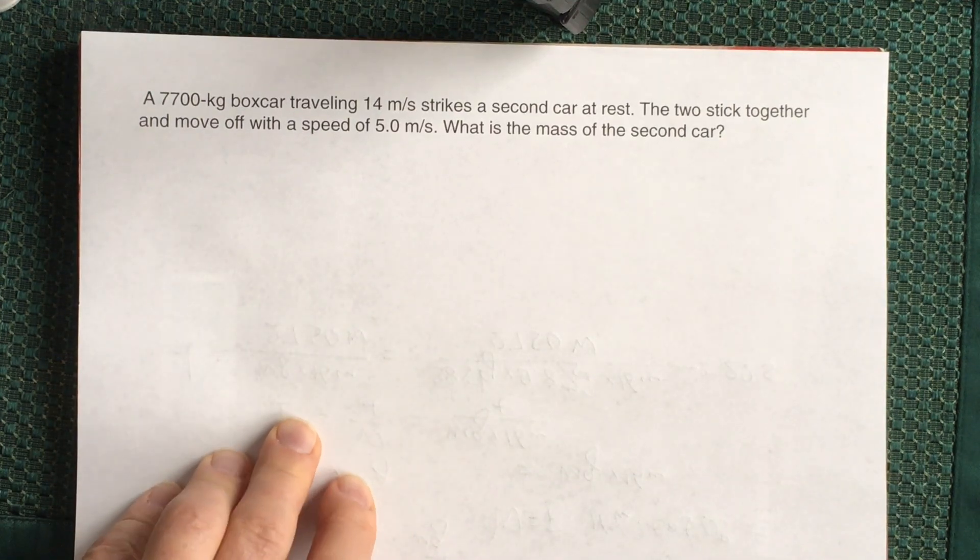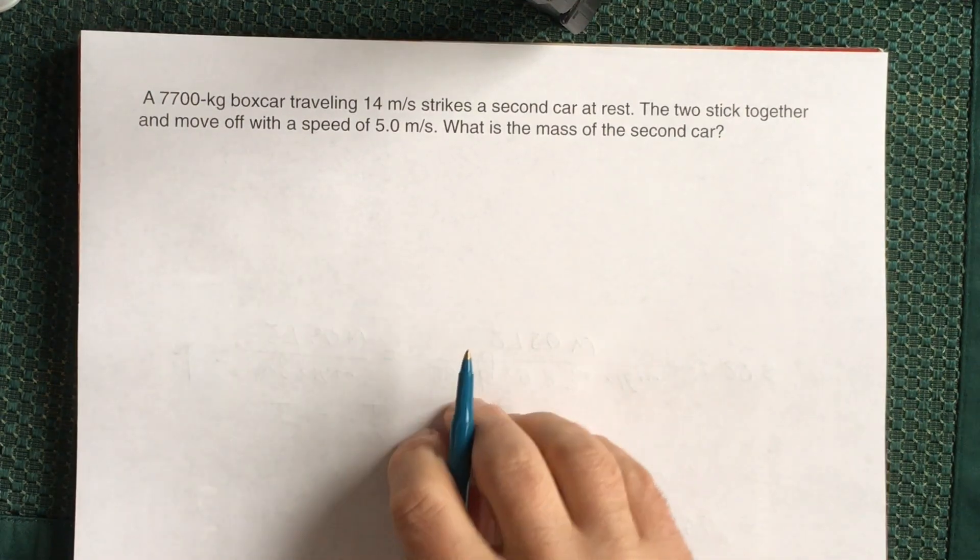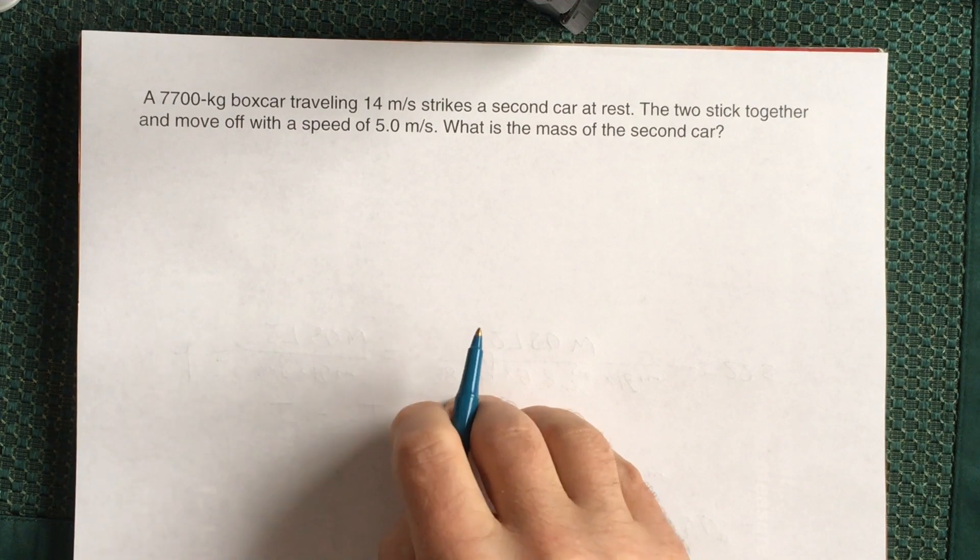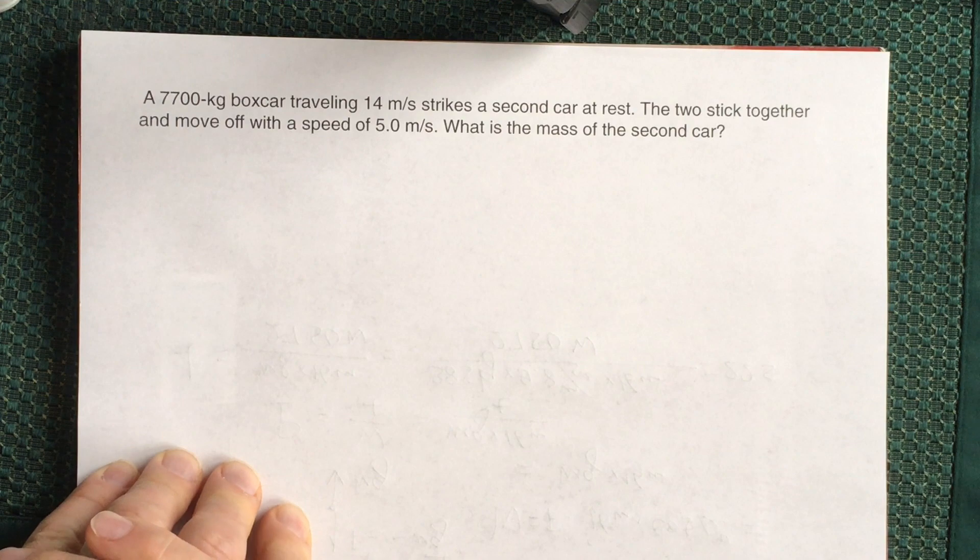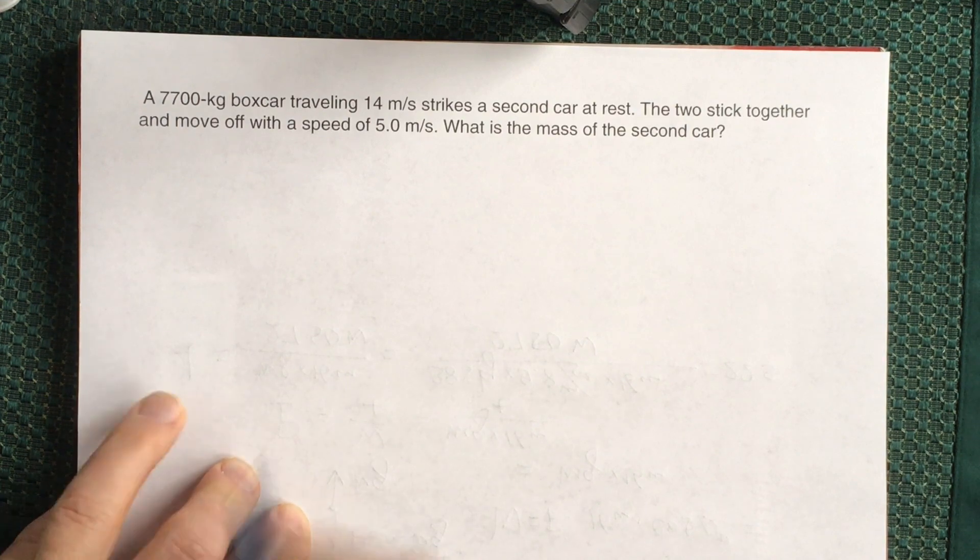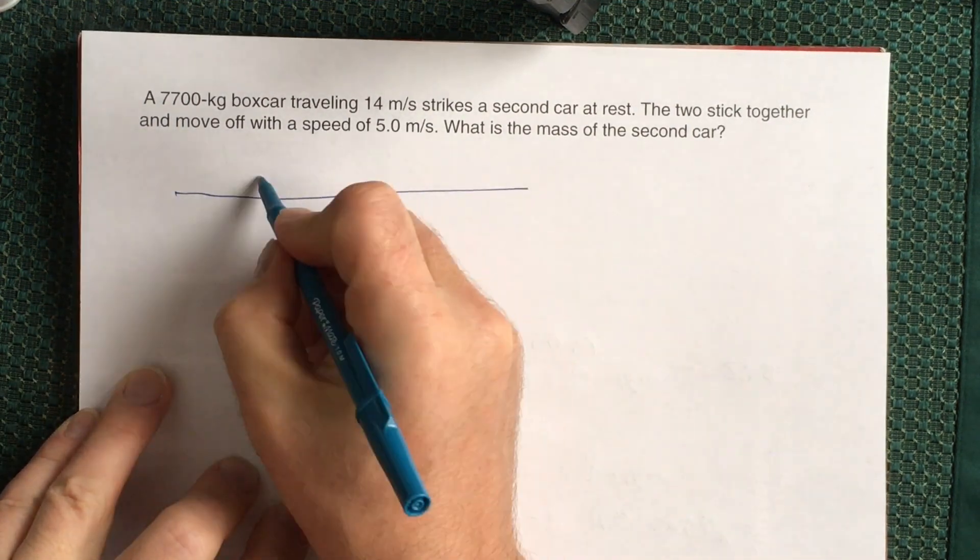A 7700 kg boxcar traveling 14 meters per second strikes a second car at rest. The two stick together and move off with a speed of 5 meters per second. What is the mass of the second car? This is a typical conservation of linear momentum problem.